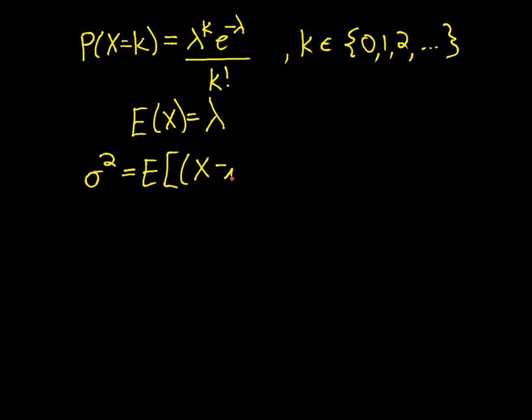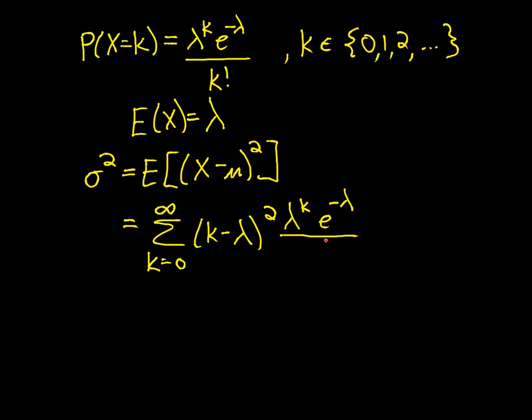So it's the expectation of x minus mu squared, which means we find these values, multiply it by the probabilities, and sum. So that's going to be the sum from 0 to infinity of k minus mu. Mu is the expectation, which in this case is lambda squared, times the probability that x is k. And actually, I'm not going to write that here. I'm going to go ahead and plug in my distribution formula, which is lambda to the k, e to the minus lambda, over k factorial.